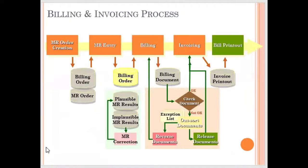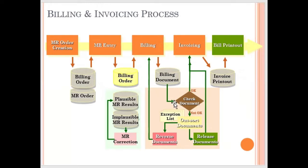In the data flow, when the meter order is created it moves to the database. Once we get the meter reading entry, it converts to a bill order. When we create the meter reading order, it creates both a billing order and a meter reading order, but the billing order is not activated until we enter the meter reading. Once it is a billing order, it moves to the billing process. Once the billing document is generated, we check whether the amount is correct — we call that outsorting. If not okay, you can reverse or release. If you reverse, it goes back to billing. If you release, it goes for invoicing.